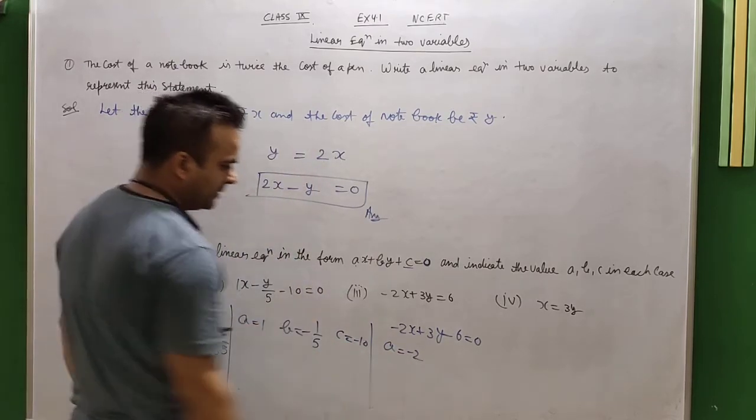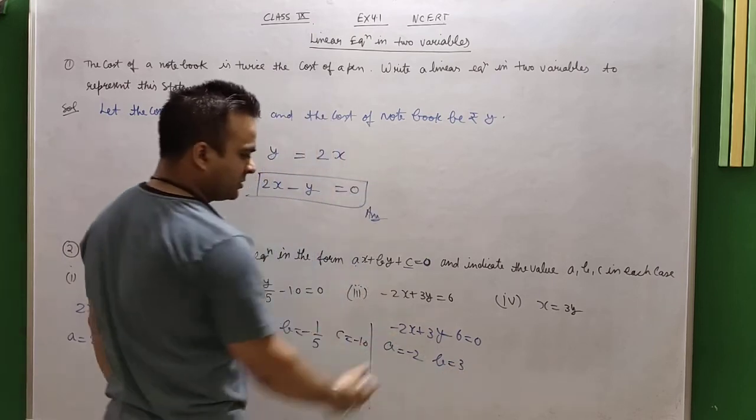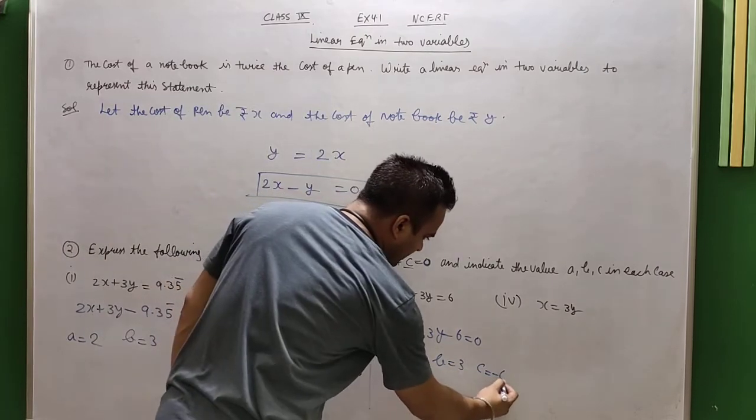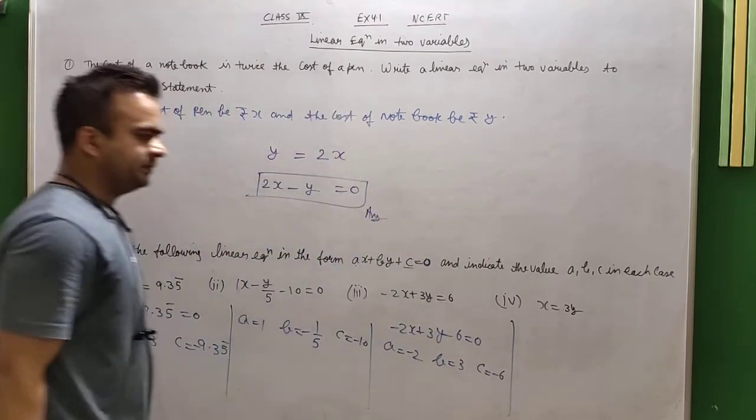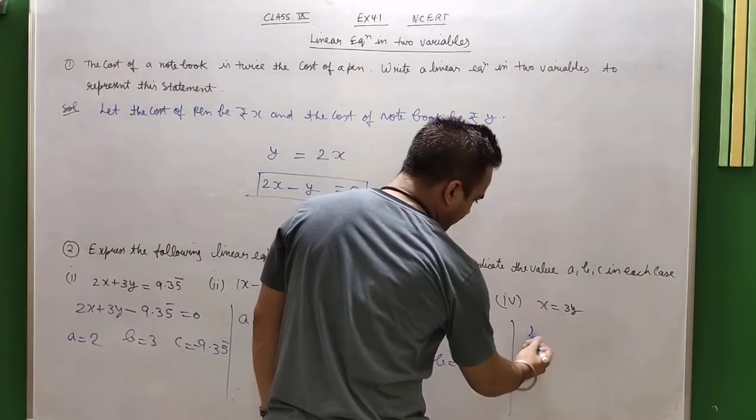Then you can see that minus 2x plus 3y equals 6, so a is minus 2, b is 3, and c is minus 6, which you can see.